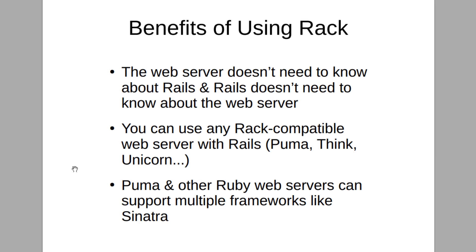You can use any Rack-compatible web server with Rails. That means we can swap Puma for Thin, Unicorn, or Passenger — we can use any of those servers. The reason we can do that is because of Rack: when there is this interface in the middle, the web server becomes a component we can change. It also works both ways, so we can use Puma as our web server with any web framework — Puma is not tied directly to Rails, so it can also be used with Sinatra or other web frameworks.